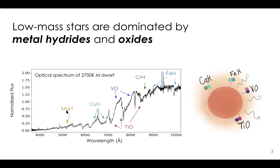Most of the wiggles in the spectrum are not noise — they're actually absorption from molecules. I've labeled the main molecules detectable in the visible, and all of them happen to be metal oxides and metal hydrides. We can detect magnesium hydride, calcium hydride, chromium hydride, and iron hydride in this region, and we also see lots of absorption from two metal oxides: titanium oxide and vanadium oxide.